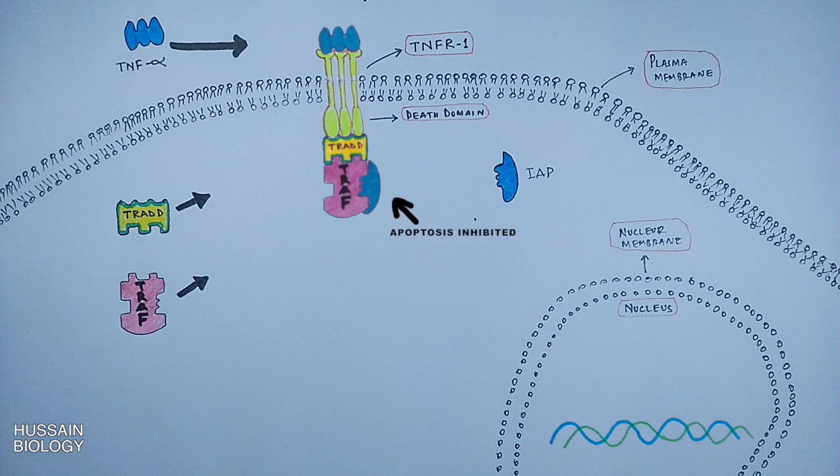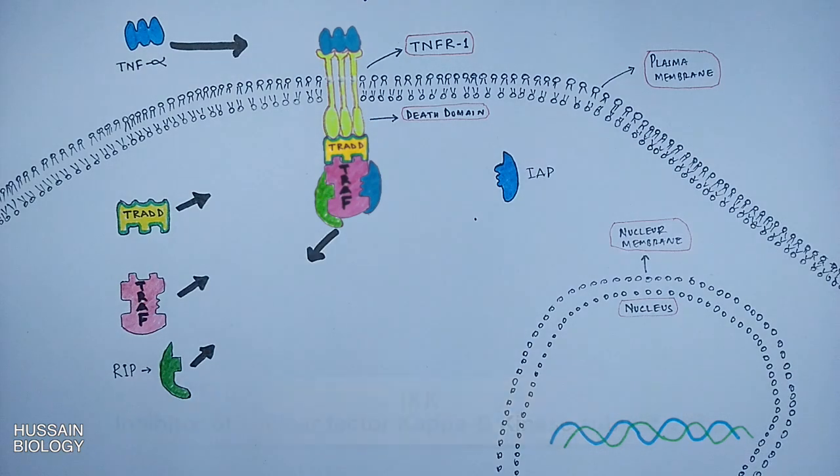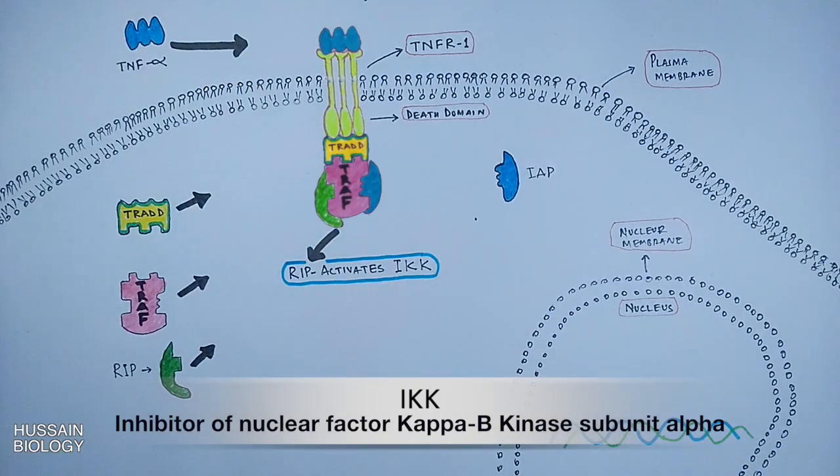So now apoptosis is inhibited and the cell will lead towards the NF-κB pathway. In the next step, TRAF also recruits RIP protein, and this RIP protein further activates the IKK molecule, which has kinase activity.